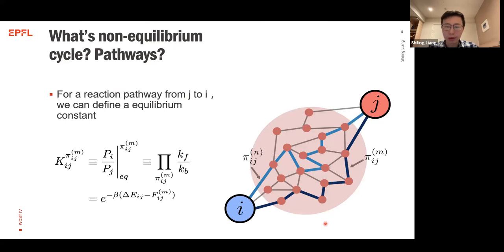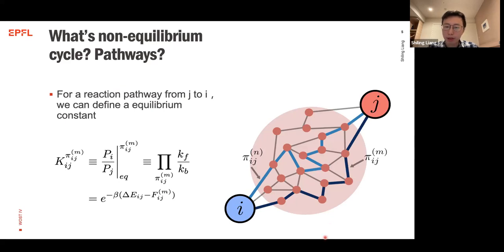We now want to go back to the pathway interpretation of non-equilibrium systems and see how cycles can be constructed from reaction pathways. In a chemical reaction network — for example with states i and j — if the network is complex, we can define multiple reaction pathways through the network.